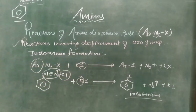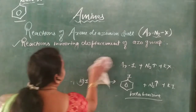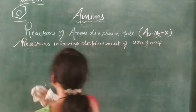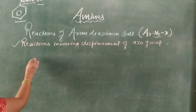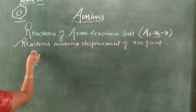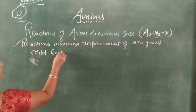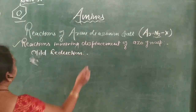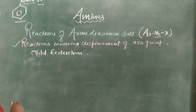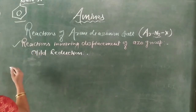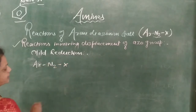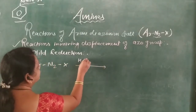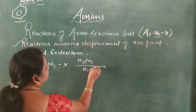Next is mild reduction — mild reduction of aryl diazonium salt to give the corresponding arene or benzene. In mild reduction, either phosphorous acid H3PO2 or ethyl alcohol is used as the mild reducing agent. ArN2X reacts with H3PO2 and H2O.